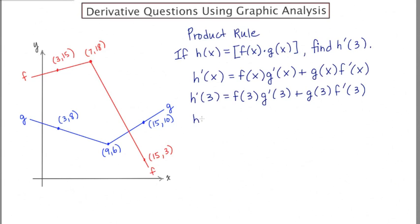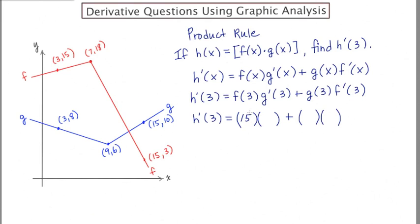Now we have to interact with the graph and figure out what these values are. I'm going to make four blanks to represent the four values I need to find. The first thing I need is f of three. There are two graphs — one for the f function in red and the other for the g function in blue. Going to the f graph and finding x equals three gives a y value of 15, so f of three is 15. Then g of three, found on the blue graph, is eight.